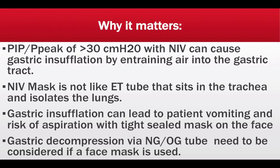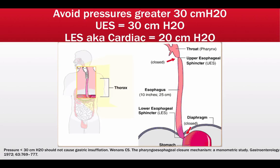Because of the tight-fitted mask, the risk of aspiration is extremely high. Due to this concern, gastric decompression via a nasogastric tube or gastric tube may be performed prior to non-invasive ventilation application, since a face mask facilitates air insufflation into both the trachea and the esophagus. You would want to avoid pressures that exceed 30 centimeters of water pressure, because the upper esophageal sphincter can be overcome at pressures in excess of 30 centimeters of water — as demonstrated in a manometric study published in the journal Gastroenterology in 1972.